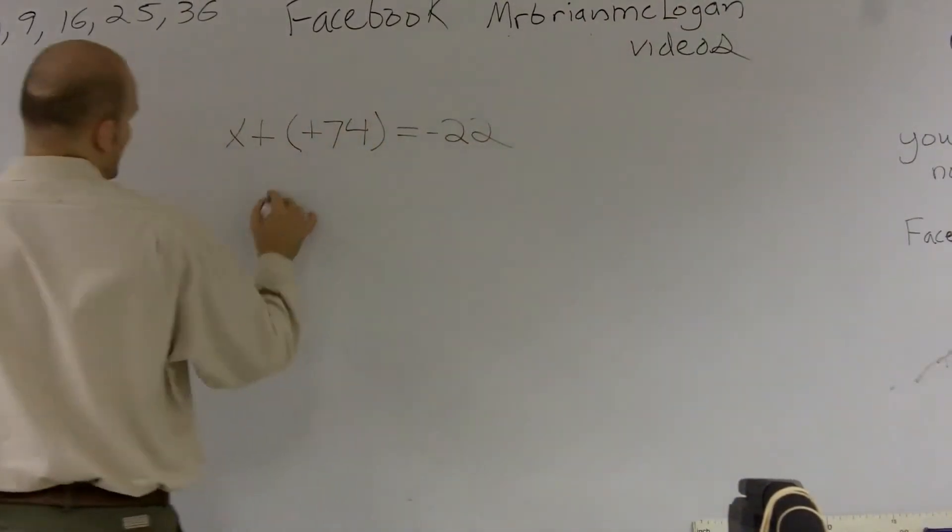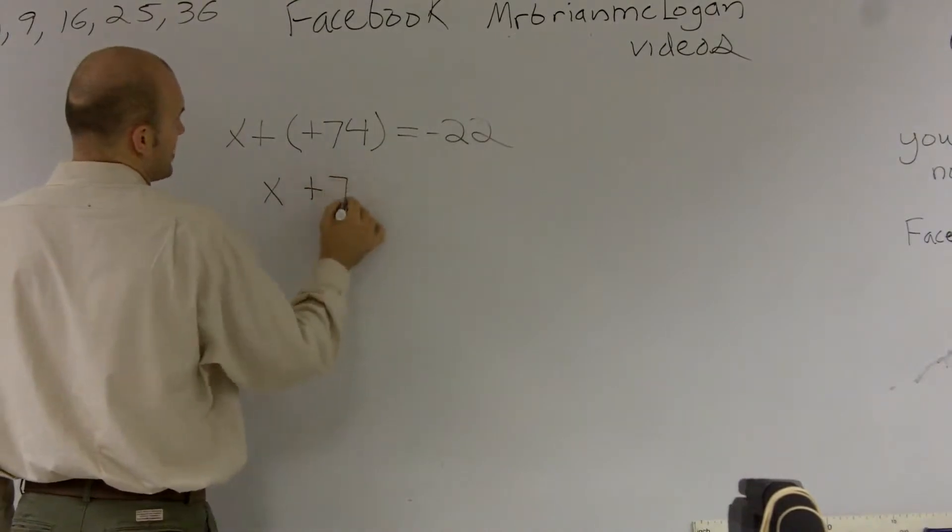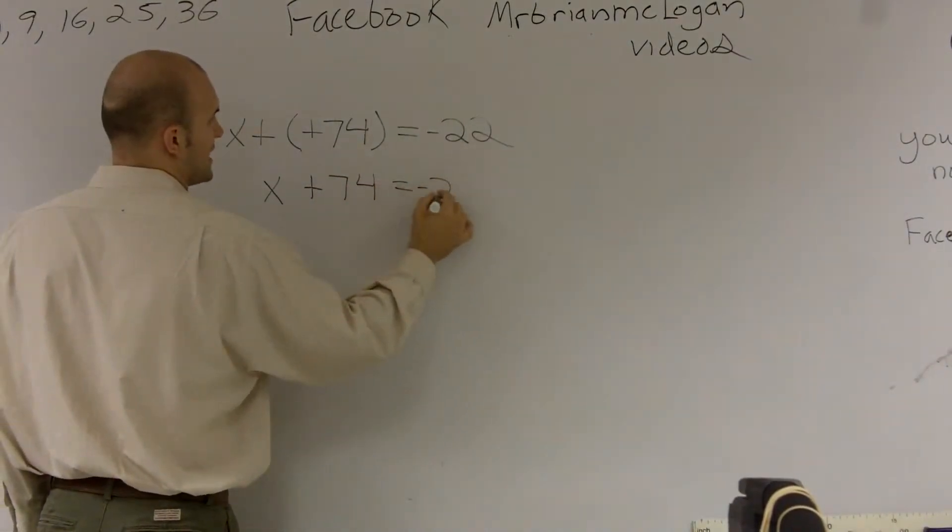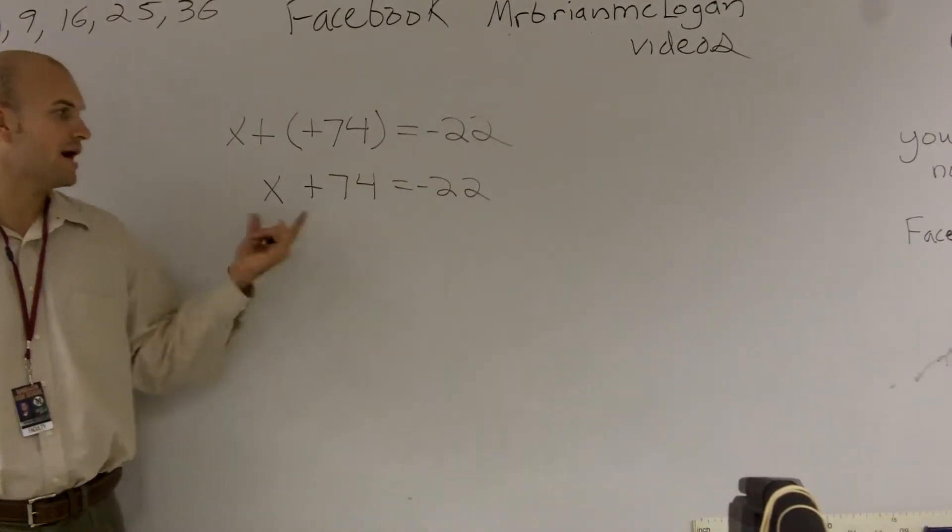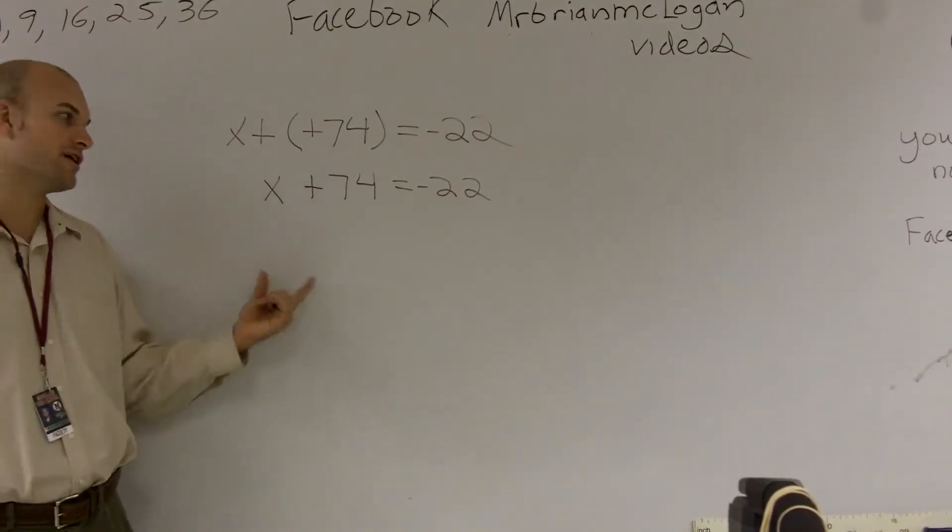So I'm going to rewrite my equation now into x plus 74 equals a negative 22. Now, using my inverse operations, I have to undo whatever's happening to my variable.